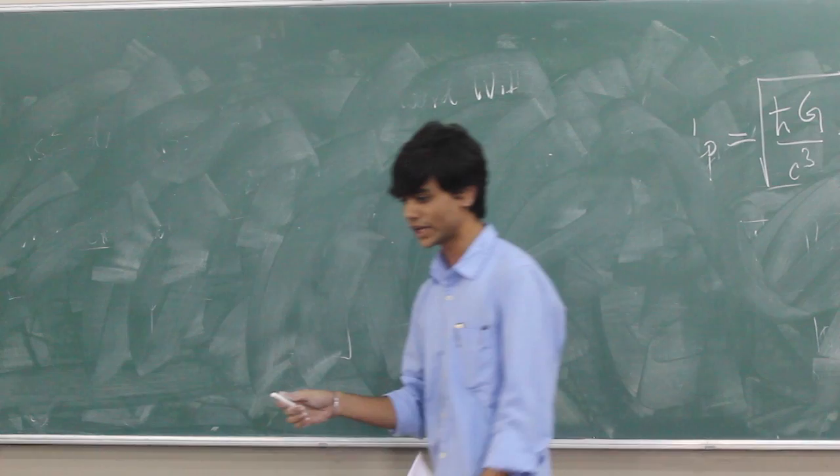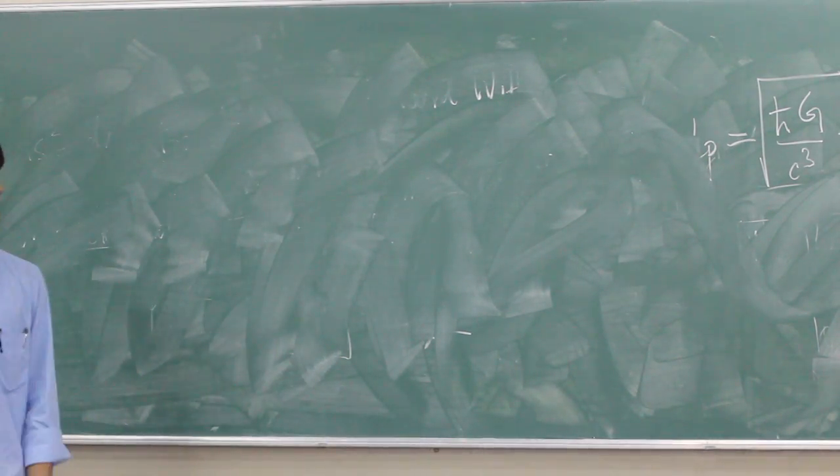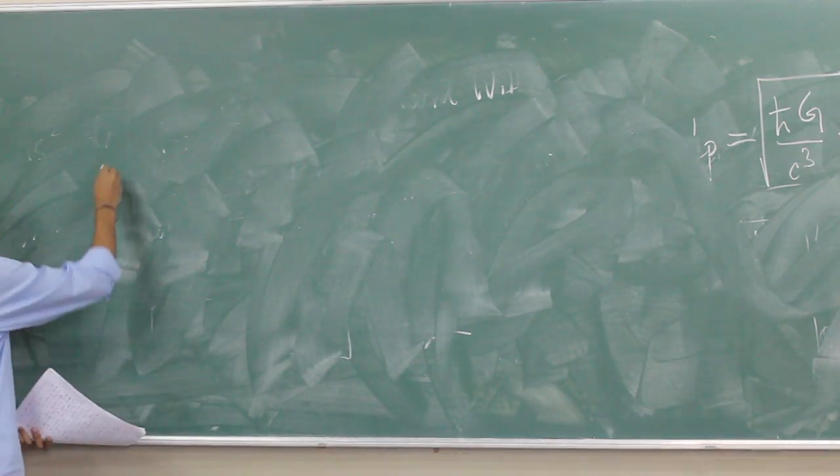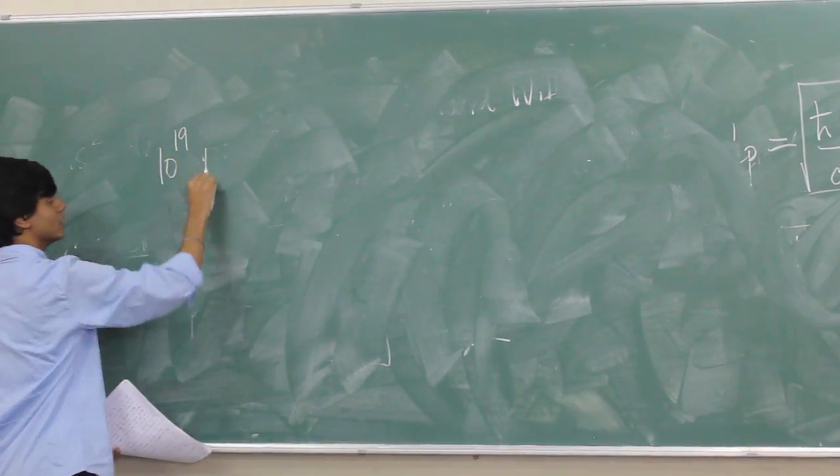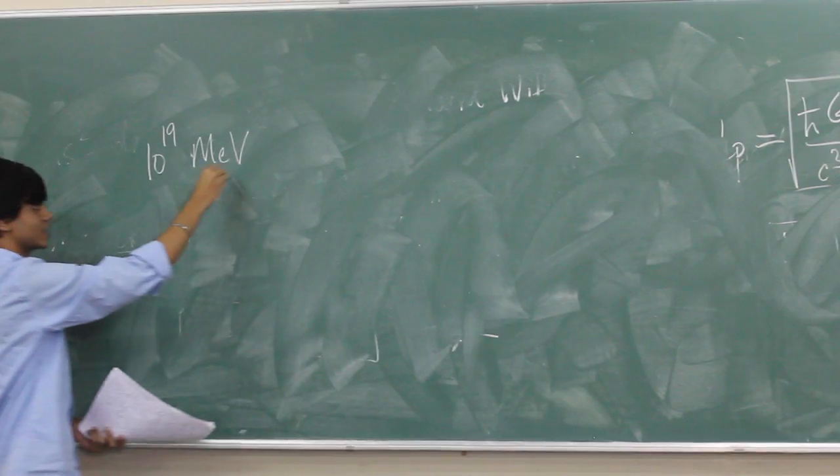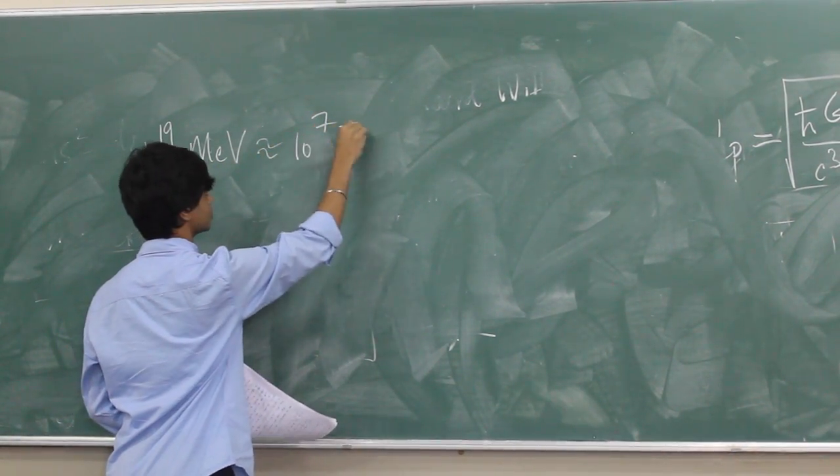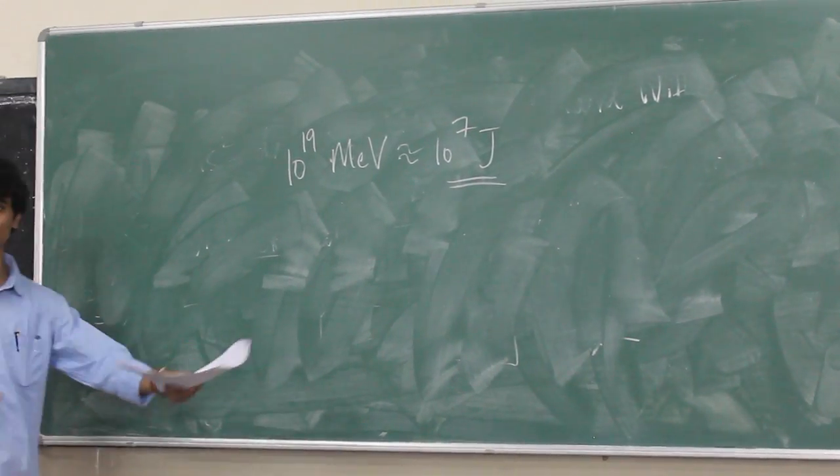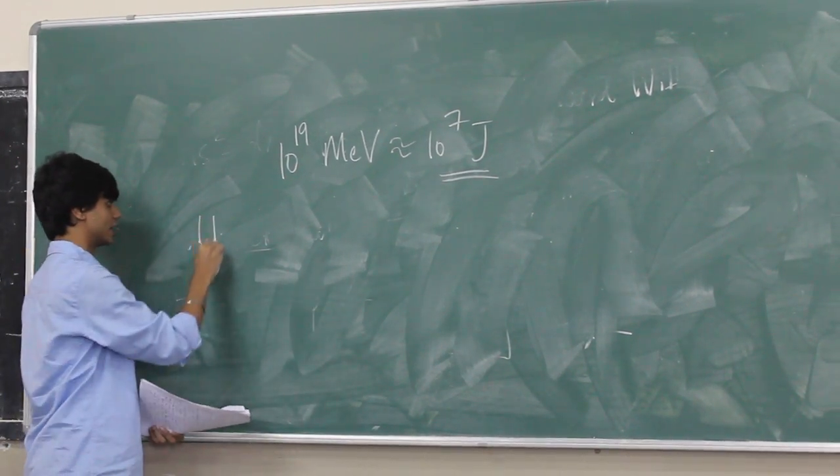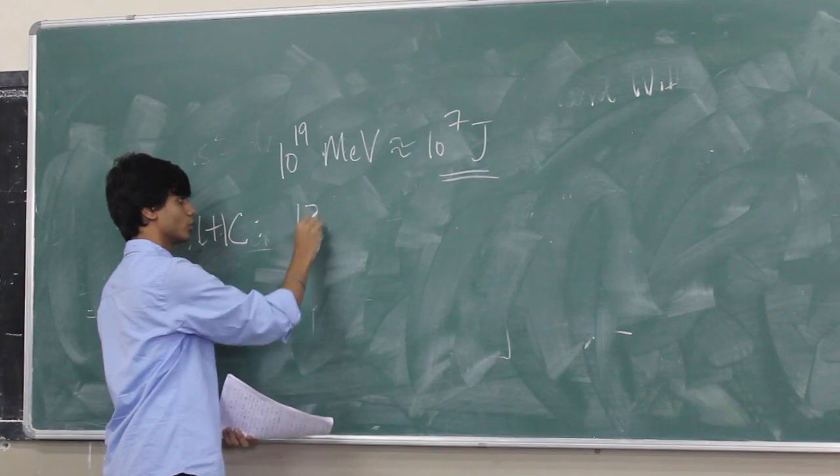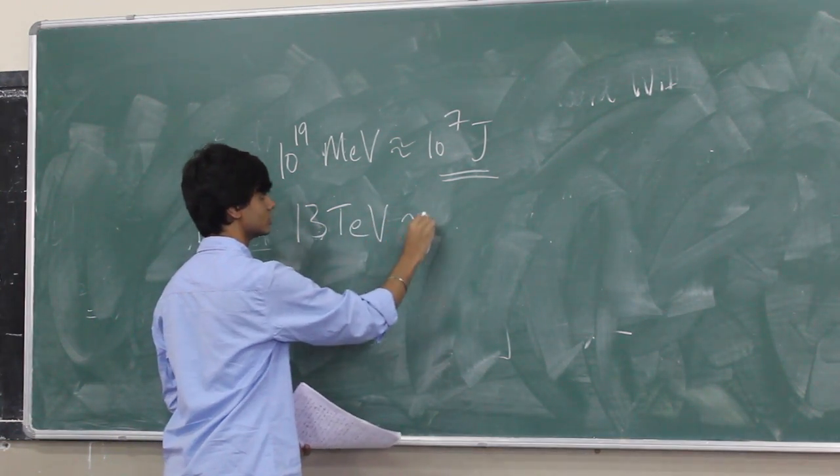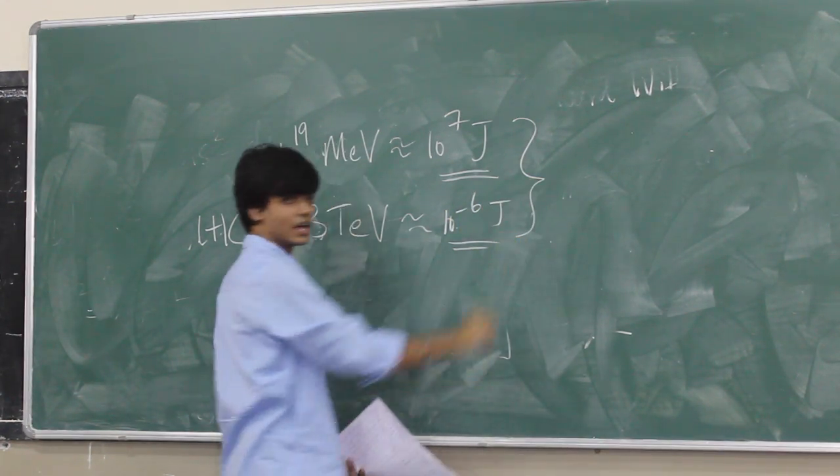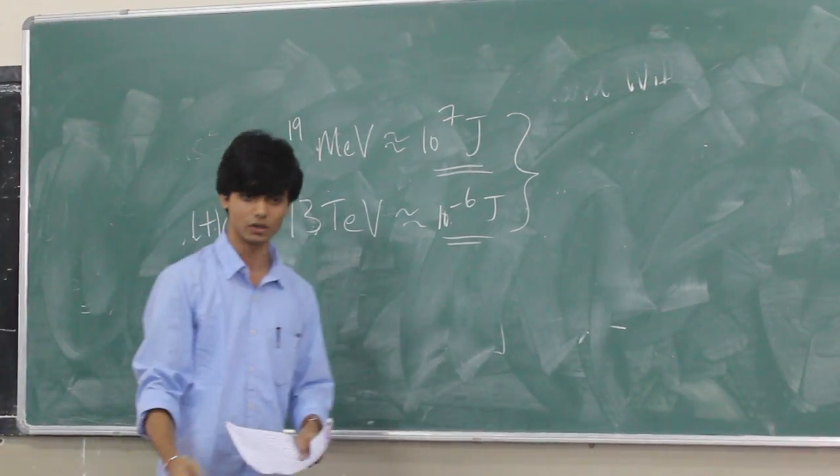Now, why can't we experiment about these string theory's predictions? String theory is the theory of the small, of the quantum realm. And to go into the quantum realm, we need energies of about 10 to the 19 mega electron volts, which is around, from the right, 10 to the 7 joules of energy we need, to go into the quantum realm, that is at least to the electrons level. Electron, or at least the protons level. But as the large hadron collider, which was opened up recently again, can reach up to energies of only 13 tera electron volts, which is almost 10 to the minus 6 joules. So you see the difference here. This large energy gap is why, for now, above string theory.